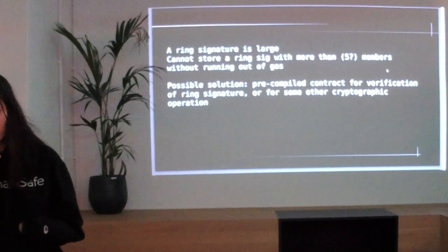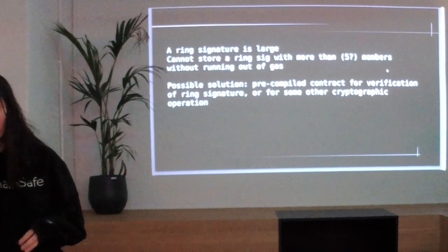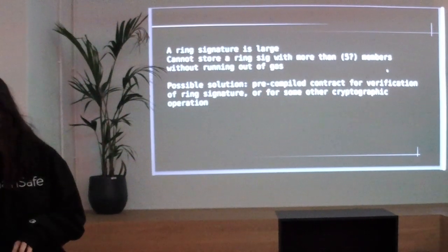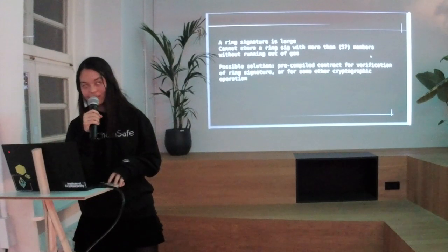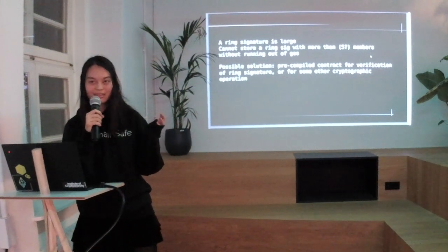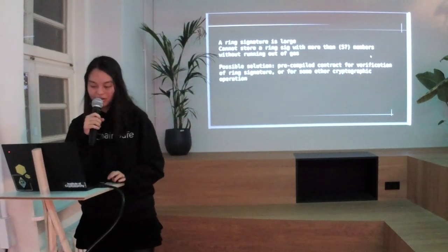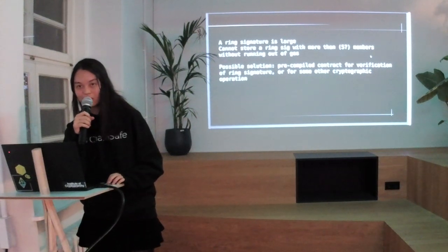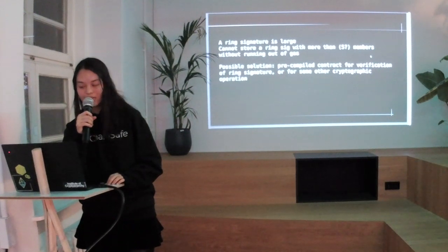A possible solution I thought of was to create a pre-compiled contract that would verify the ring signature, and then eventually push this upstream. I implemented that and it seems to work so far, which is cool — but for it to actually work it would have to be pushed up, and that would take a very long time. So another solution I was thinking of is to just use the BN256 pre-compiles, and hopefully that will reduce the gas cost.